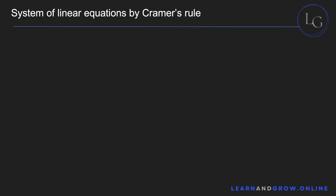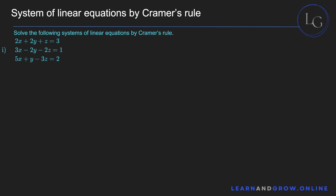Let's solve the system of linear equations using a method called Cramer's Rule. We have the system of linear equations and we will convert it into a matrix form. This first column represents the variable X, the second column represents the variable Y, and the third column represents the variable Z.